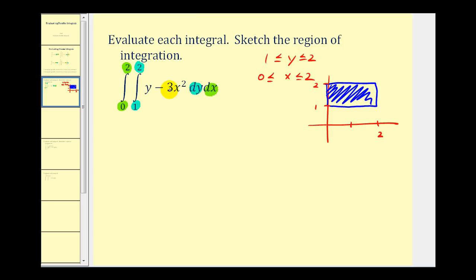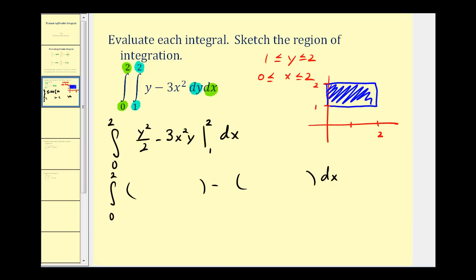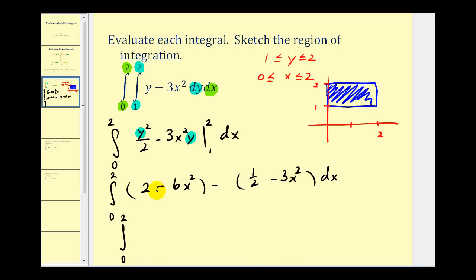Now we're going to integrate with respect to y, treating x as a constant. So we'll have y²/2, and minus 3x² as a constant gives us minus 3x²y. The limits of integration are from 1 to 2. Because we integrate with respect to y, we replace y with the values 2 and 1. When y is 2, we have 2²/2 = 2, minus 3x² times 2, that's 6x². When y is 1, we have 1/2 minus 3x². So we get 2 − 1/2 = 3/2, and −6x² − (−3x²) = −3x².